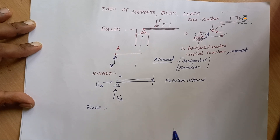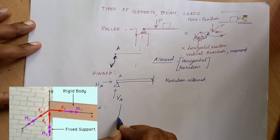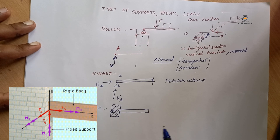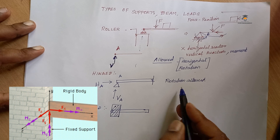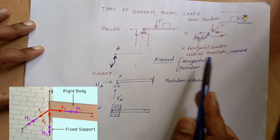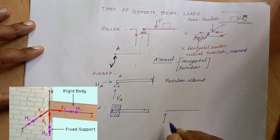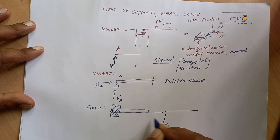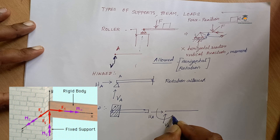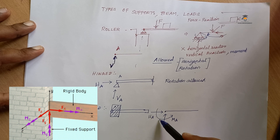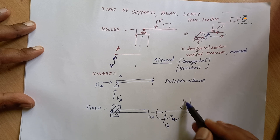Fixed support — for example, here is a beam. At the line of motion, it is constrained. Horizontal movement is not allowed; vertical movement is also not allowed. There is a vertical reaction VA, horizontal reaction HA, and moment MA. If you want to allow rotation, there will be an opposite moment.